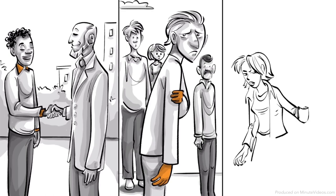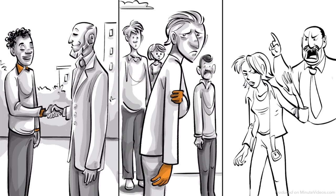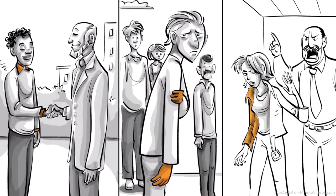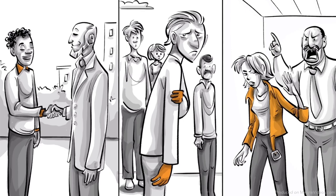Ida develops an anal expulsive personality. She becomes messy, disorganized, inconsiderate of other people's feelings and rebellious against authority.